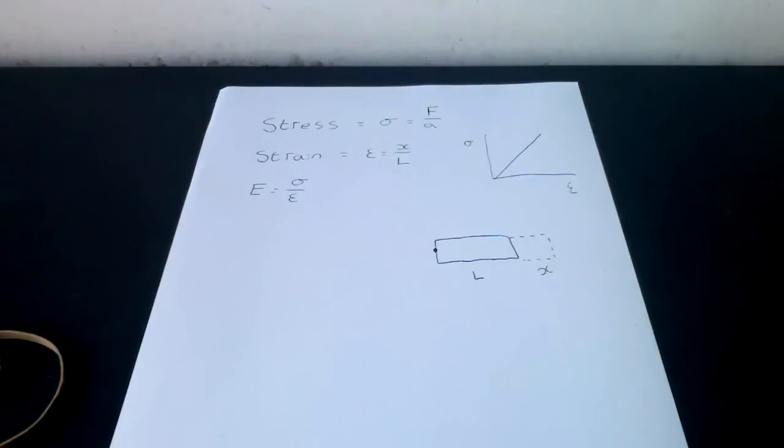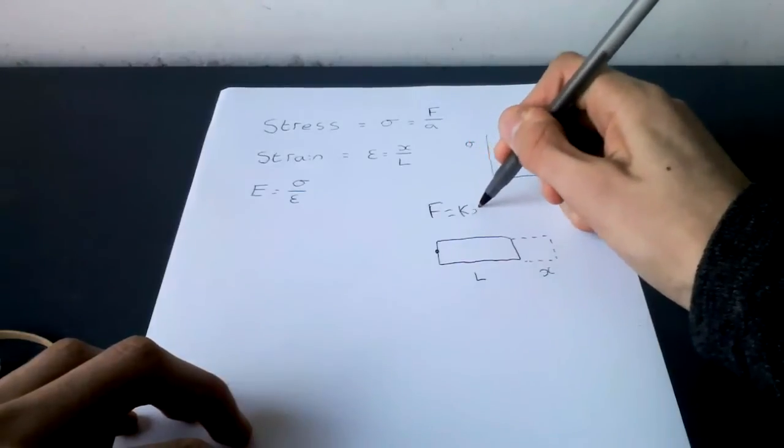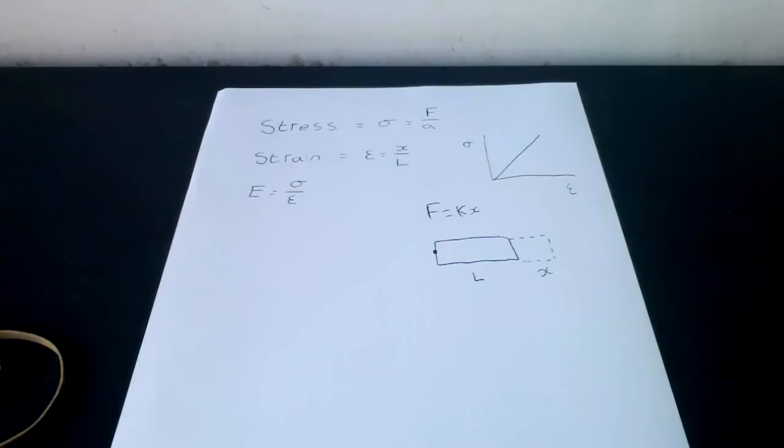Next we will look at Hooke's law which is given by F equals KX, where F is the force applied, K is the spring's constant and X is the length of the extension.